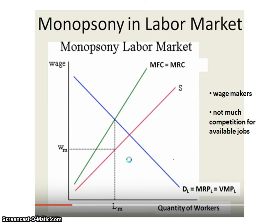The monopsony graph does not look like the perfectly competitive graph. We don't have that perfectly elastic supply curve that is equal to the MRC, because in the monopsony or imperfectly competitive labor market, firms are known as wage makers instead of wage takers. That means firms have more control over the wage rate and the amount they are willing and able to pay workers, because there isn't as much competition for available jobs.